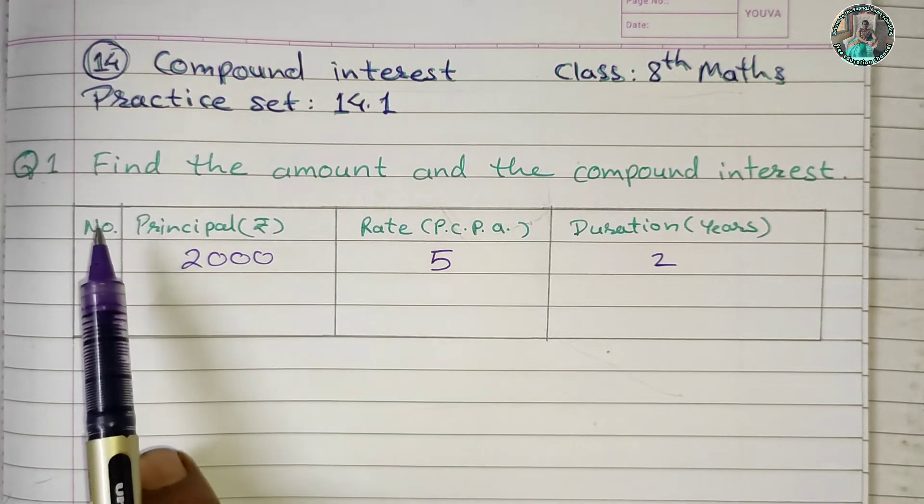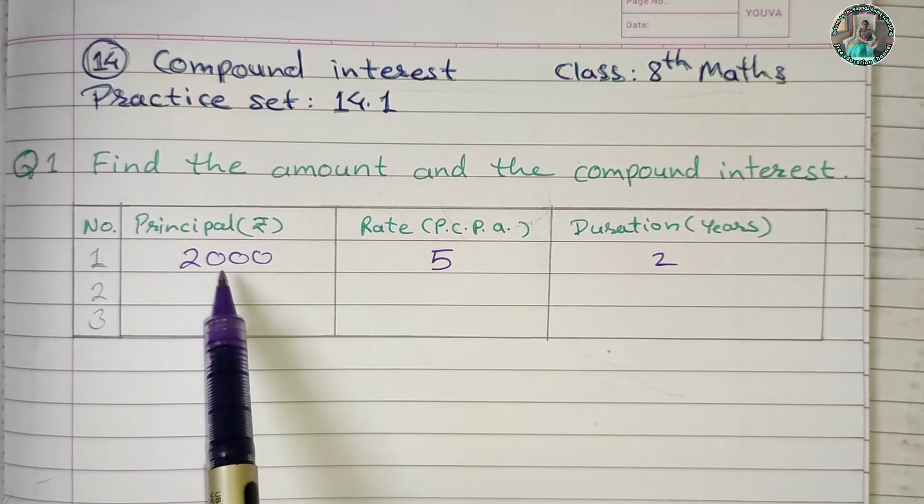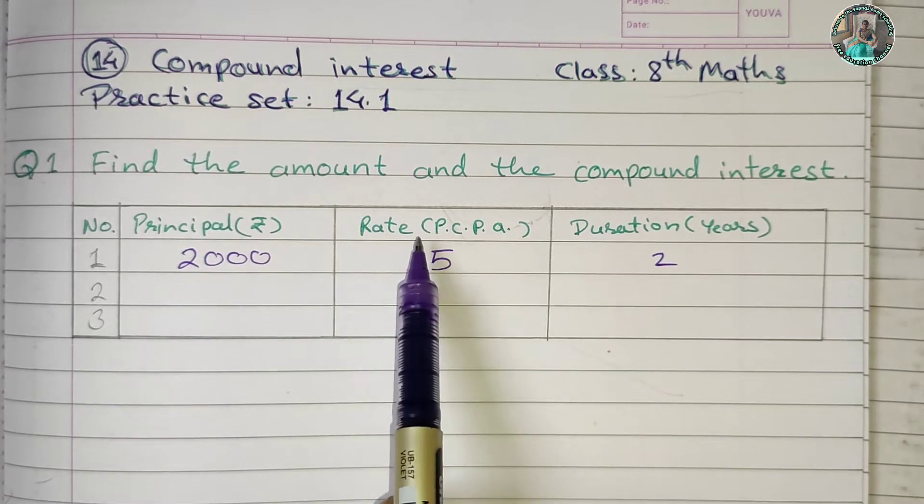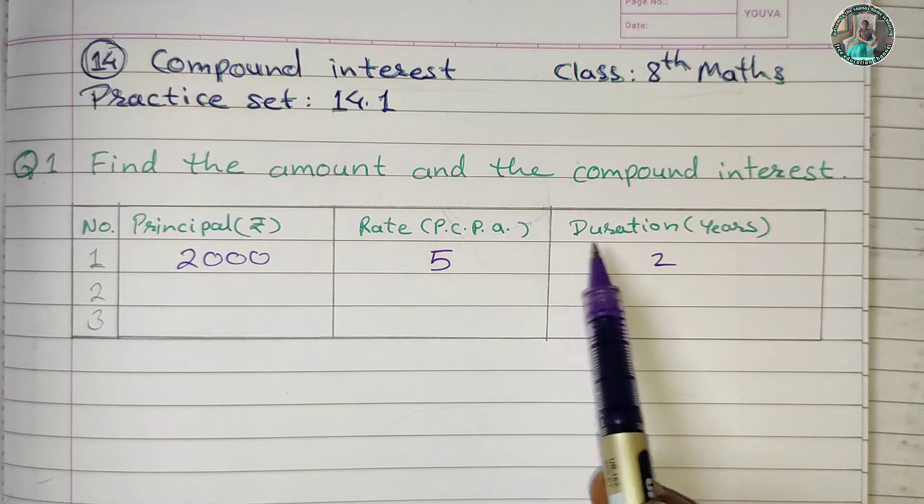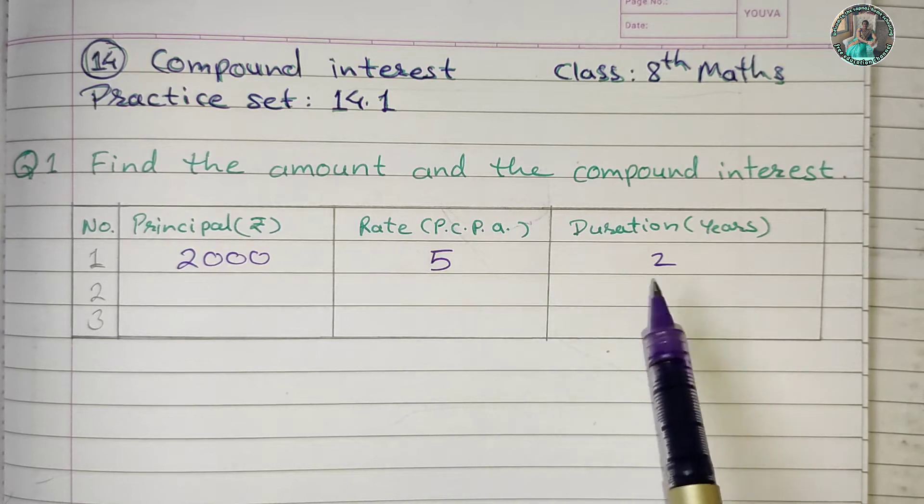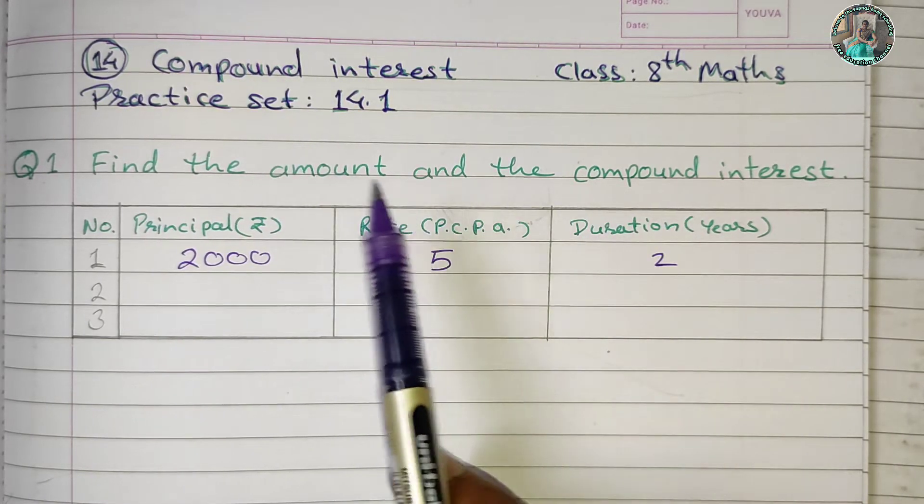Question 1: the principal amount is Rs. 2000, the rate is 5% per annum, and the duration is 2 years. We are going to solve this problem for compound interest and amount.